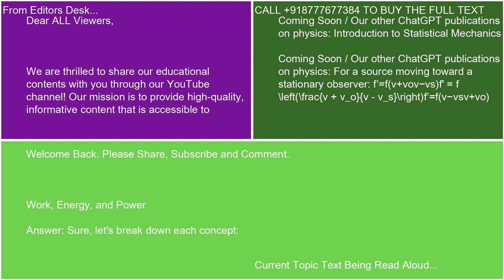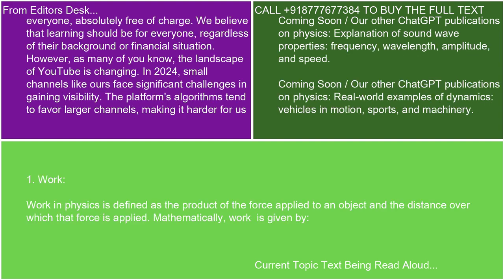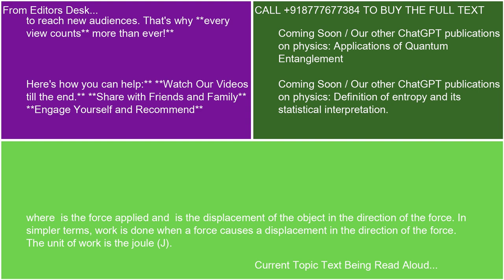Let's break down each concept. Work in physics is defined as the product of the force applied to an object and the distance over which that force is applied. Mathematically, work is given by W = F × d, where F is the force applied and d is the displacement of the object in the direction of the force. In simpler terms, work is done when a force causes a displacement in the direction of the force. The unit of work is the Joule (J).